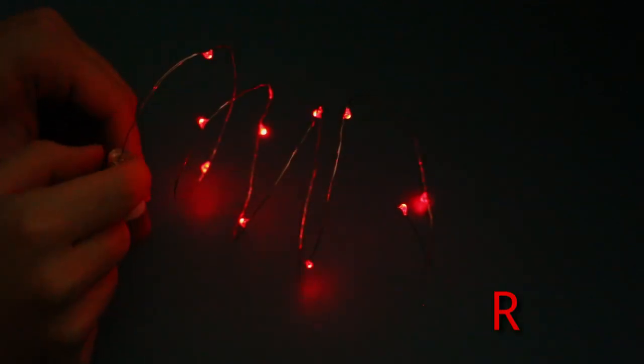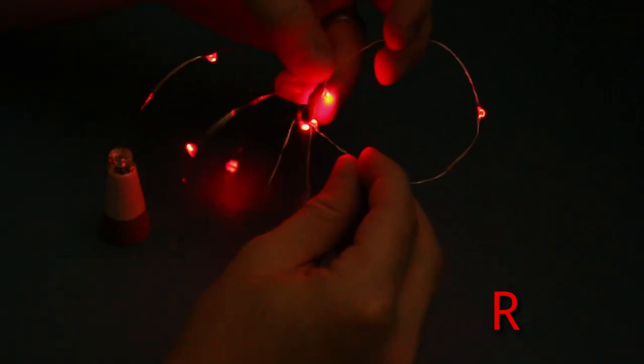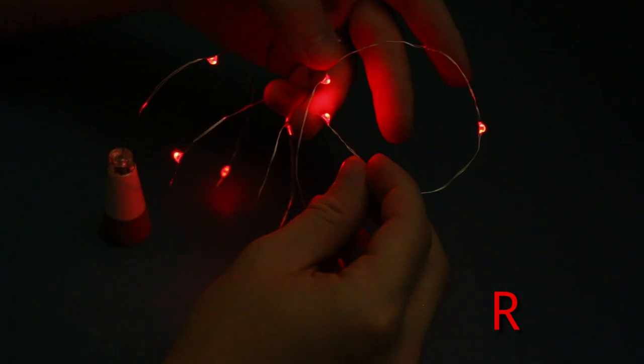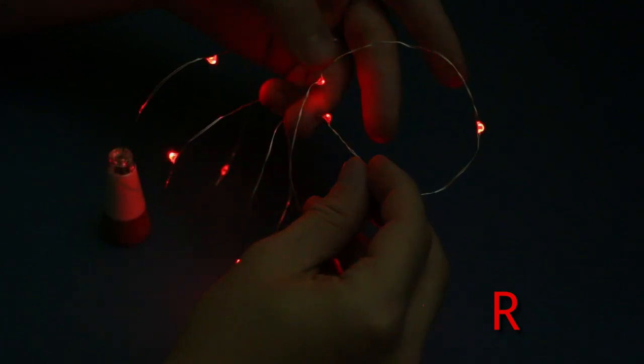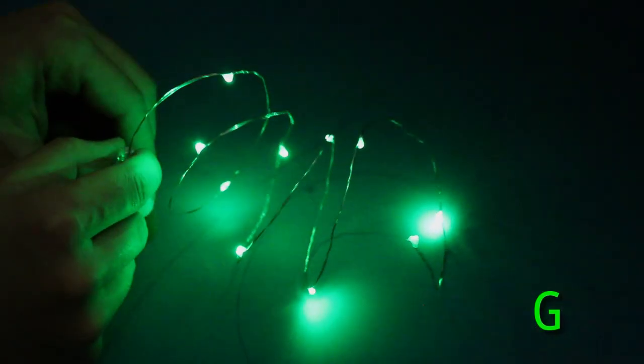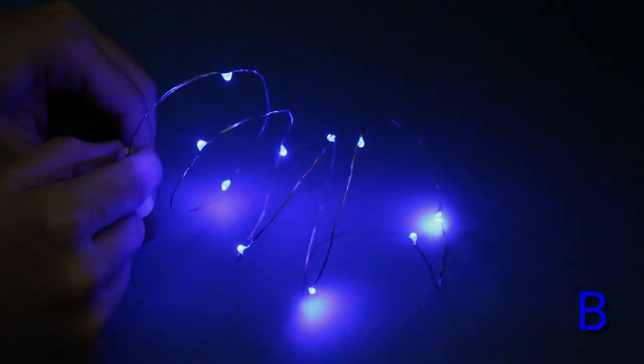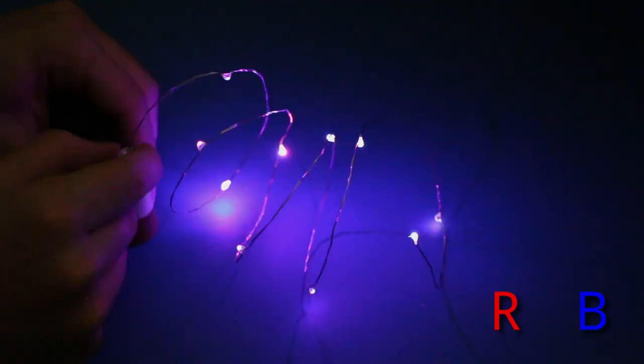Just to show those colors again in a bit of a darker setting we've got the red, and if I hold the end you can see that we've got this alternating pattern from the odd LEDs to the even LEDs. And then we've got green, blue, yellow, cyan, magenta and white.